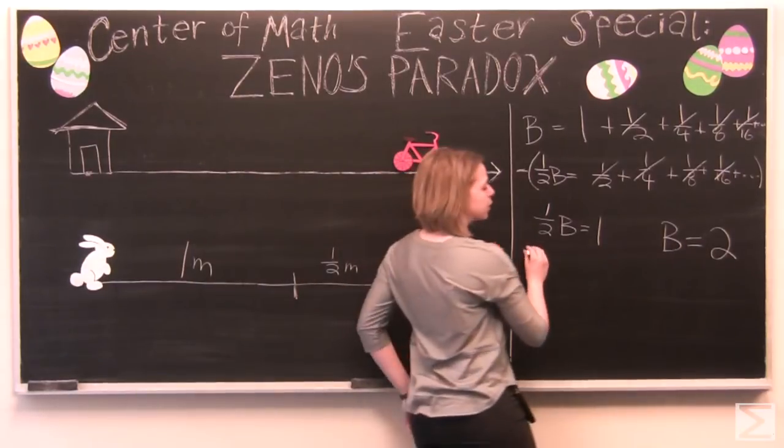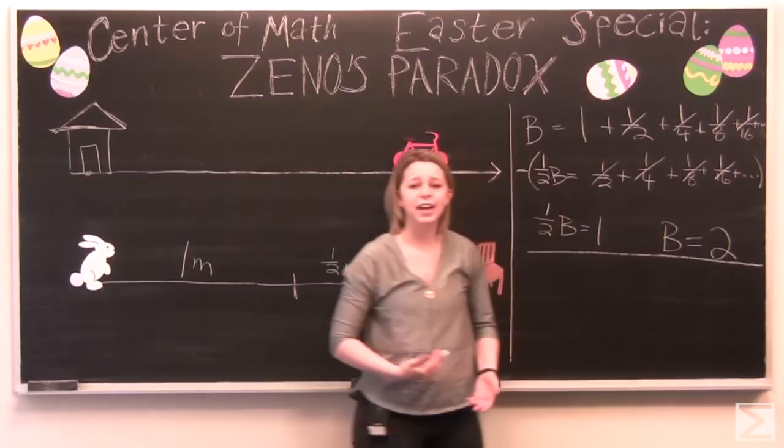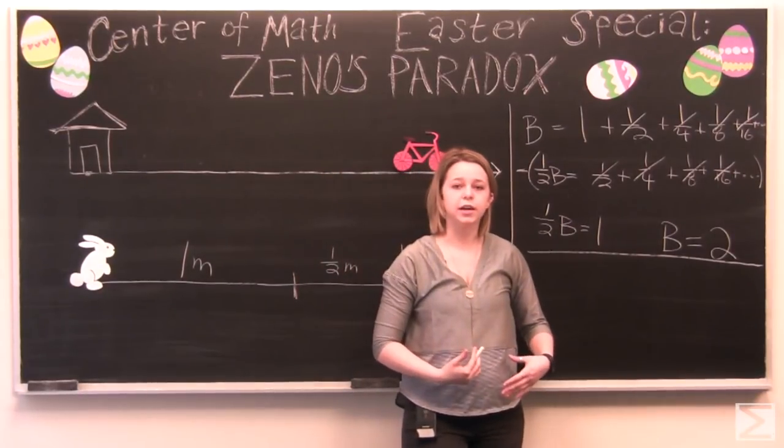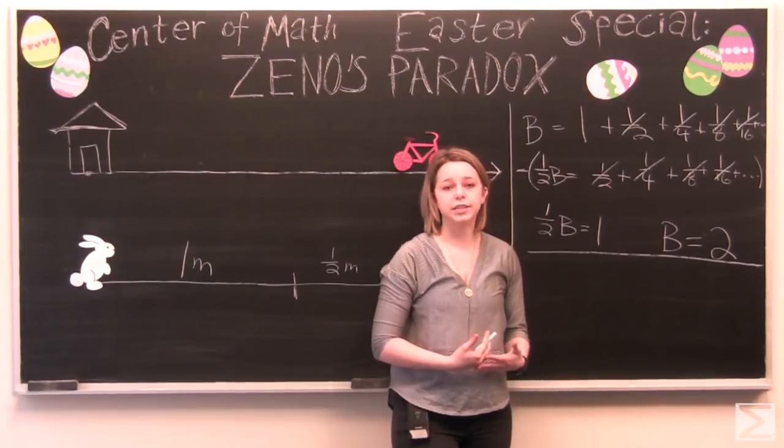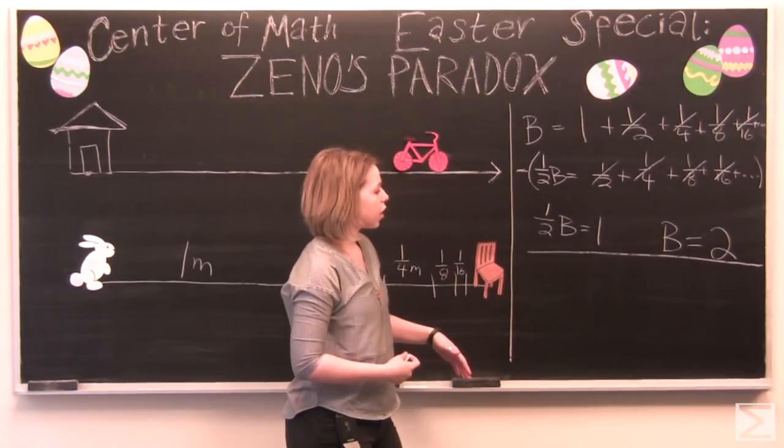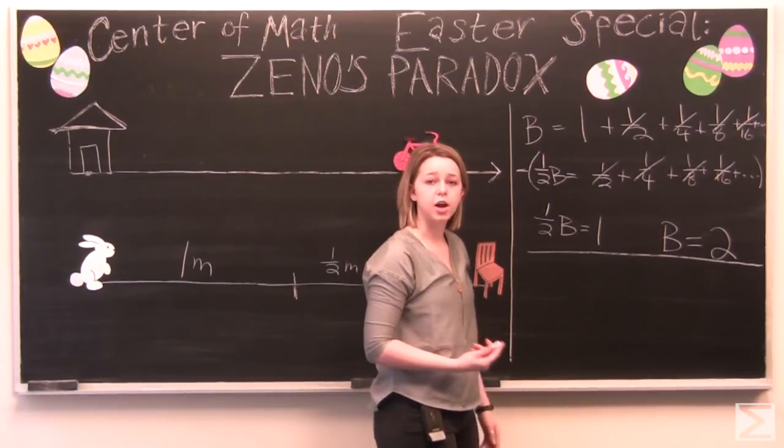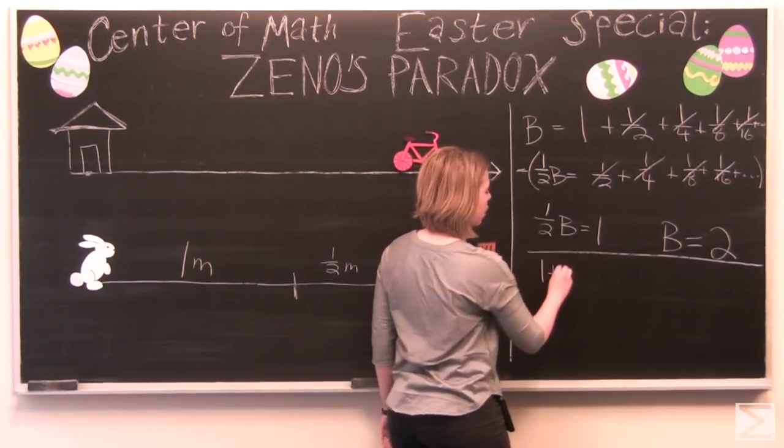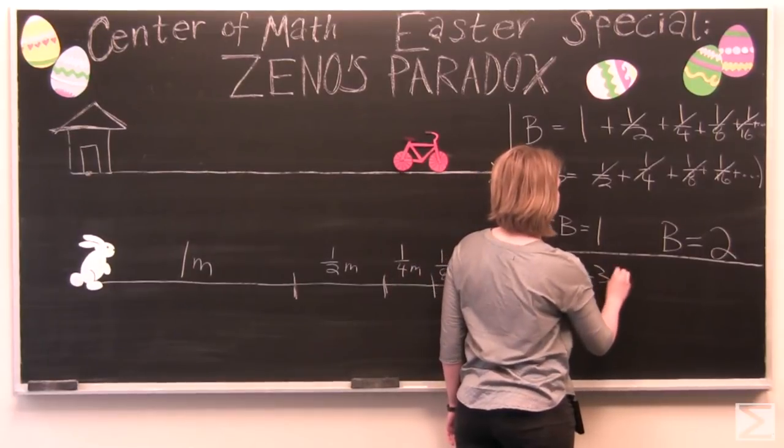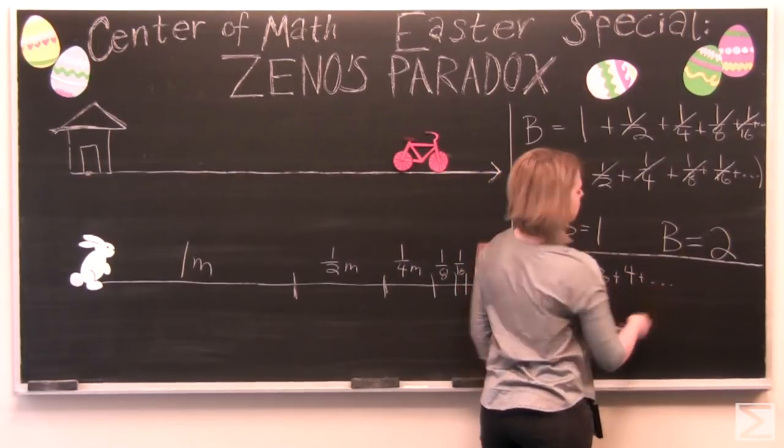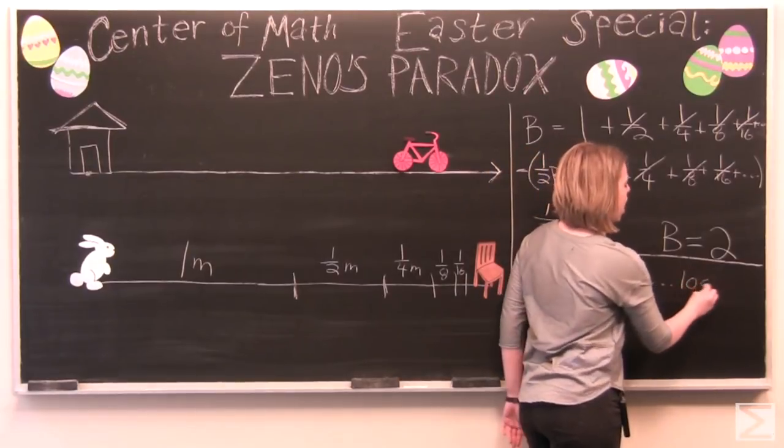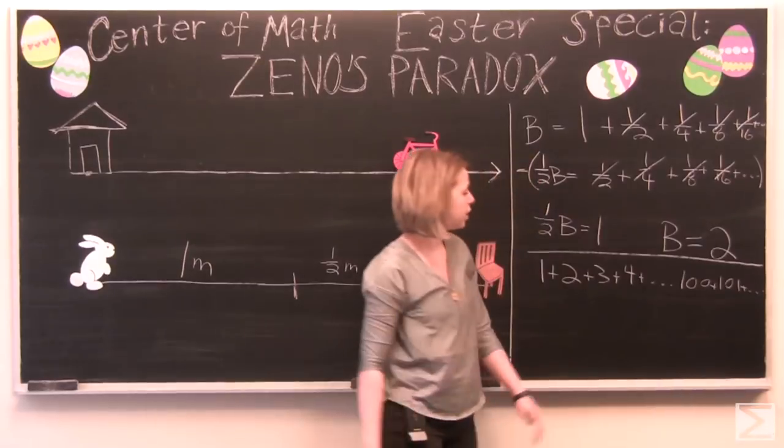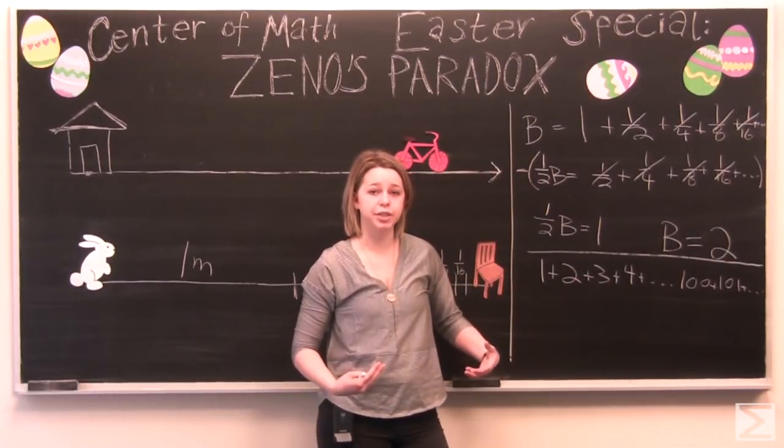Now the reason this works is because there are a couple of different kinds of infinity. And what I'm talking about in particular here is infinite series. So there are two different kinds of infinite series. There are diverging infinite series where, for example, you'd have one plus two plus three plus four plus all the way to 100 plus 101 and on and on forever.